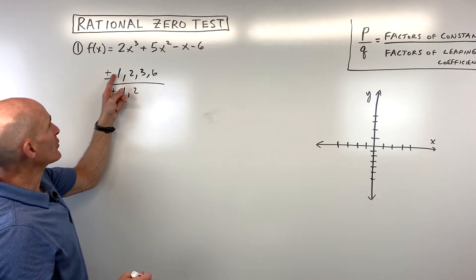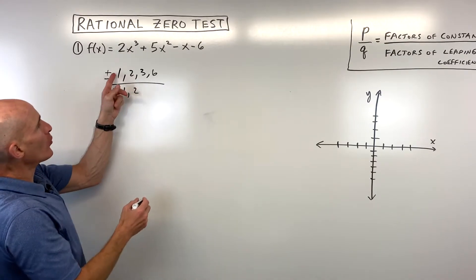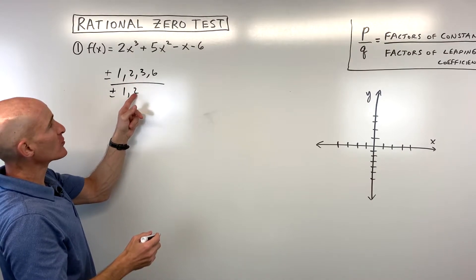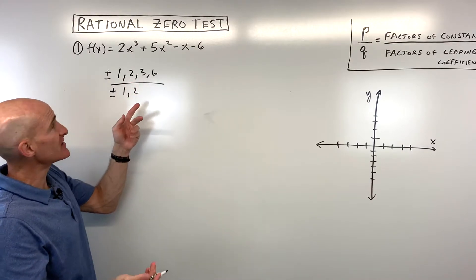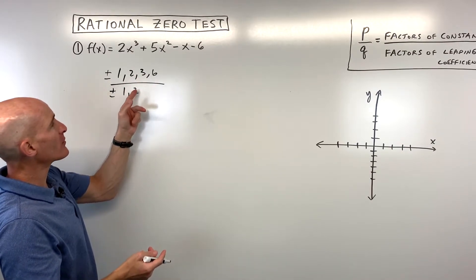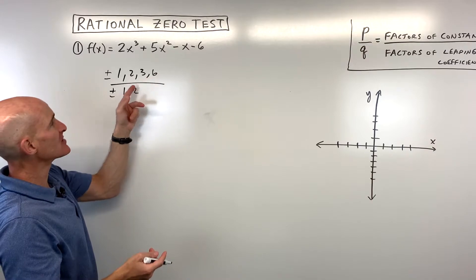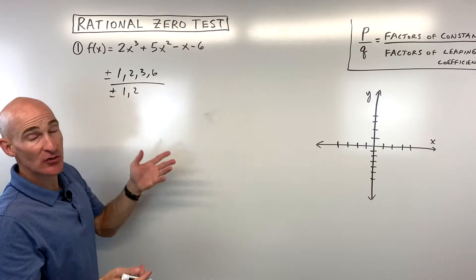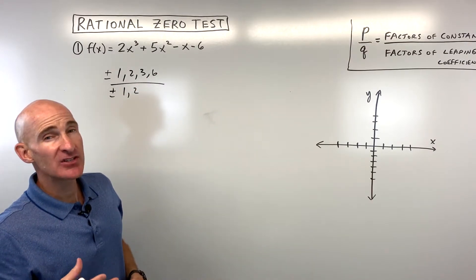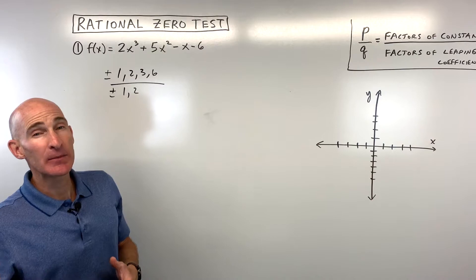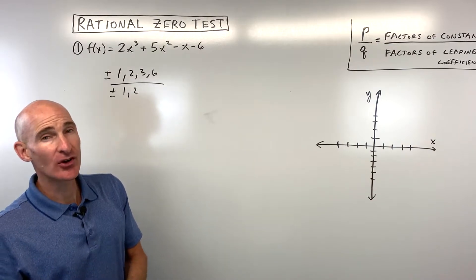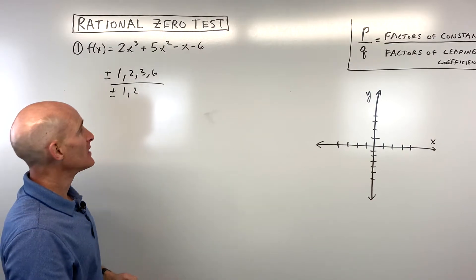You take any numerator with any denominator. So for example, it could be 1 over 1, or 1 over 2 which is a half, or 2 over 2 which is 1 — we listed that already. Three over 1, three halves, 6 over 1, 6 over 2, positive or negative. These just give us a list of the possible rational zeros.